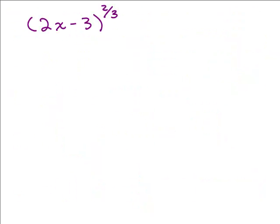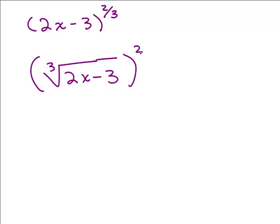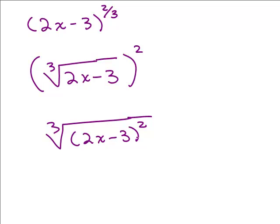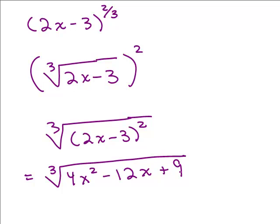How would we write 2x minus 3 to the 2 thirds power in radical notation? There are two ways: you can write the cube root of 2x minus 3 squared, or the cube root of the quantity 2x minus 3, squared. If you want, you could also multiply out the square — 2x minus 3 times 2x minus 3 is 4x squared minus 12x plus 9 — giving you a third way to write it.